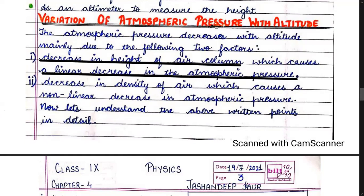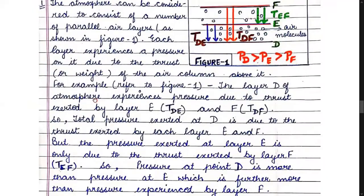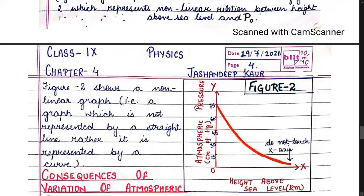If the density of air decreases, there is a non-linear decrease in atmospheric pressure. You can see the graph of this non-linear decrease on page 4 of the PDF sent on 19th July 2021, showing the non-linear decrease in atmospheric pressure with density above the height level.